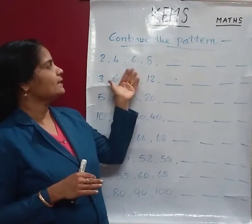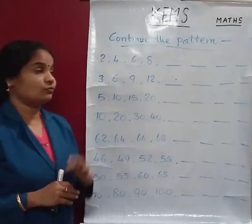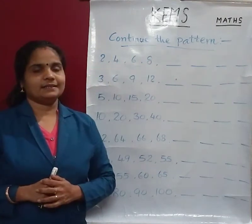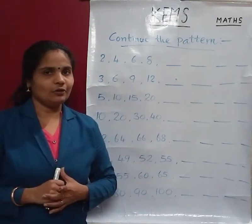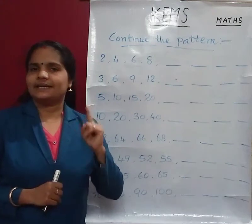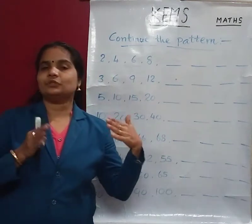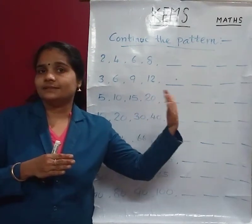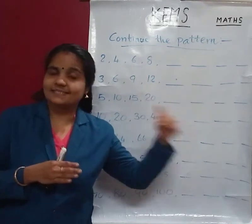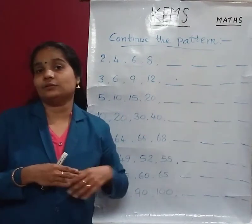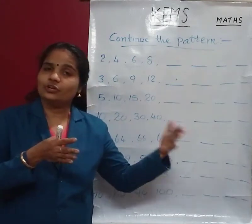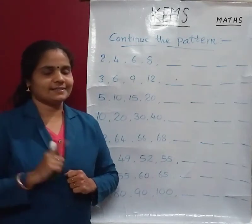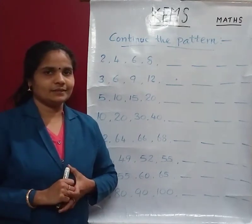So now, here, complete the patterns. First one: 2, 4, 6, 8. That is the even number. You know? Even and odd numbers. Yes, even number: 2, 4, 6, 8, 10, 12, 14, 16, 18, 20, then 22, 24, and so on. We learned that in the last class — even numbers.